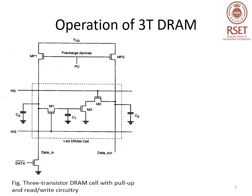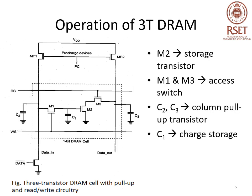Now we look at the detailed operation of the three transistor DRAM cell. The circuit includes a pull-up transistor for pre-charging and column read-write circuitry. C1 is used for charge storage, and depending on the charge in C1, transistor M2 is turned on or off. M1 and M3 act as access switch transistors for data read and write operations. The column capacitor is pre-charged to VDD, approximately 3.5 volts. There are two separate bit lines — data-in and data-out — and two separate word lines — WS (write select) and RS (read select).